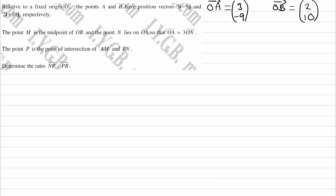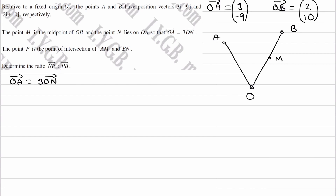We can represent this on a diagram. I'm not going to try to draw it to scale — I'm not worrying about the actual vectors. So I'm just putting A and B in random places. M is the midpoint of OB, so M is here somewhere. N lies on OA such that OA is 3 times bigger than ON, so N is here in a ratio of 1 to 2 — a third of the way along from O to A.